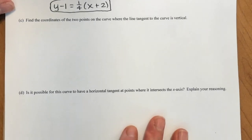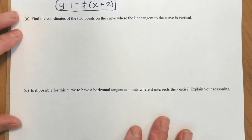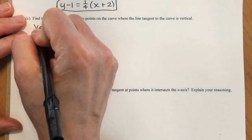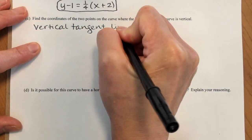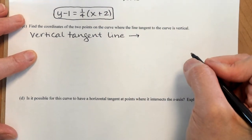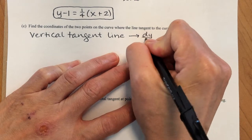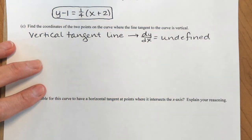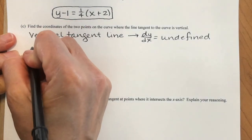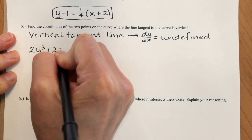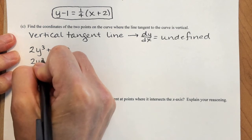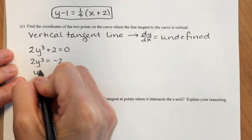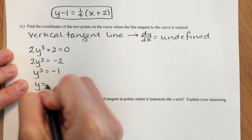Find the coordinates of the two points on the curve where the line tangent to the curve is vertical. If the tangent line is vertical, that means the tangent line has a slope that is undefined. The slope will be undefined when the denominator of the slope equation equals 0. So we want to know when 2y cubed plus 2 equals 0, or 2y cubed equals negative 2, or y cubed equals negative 1. This is when y equals negative 1 — the cube root of negative 1 is negative 1.